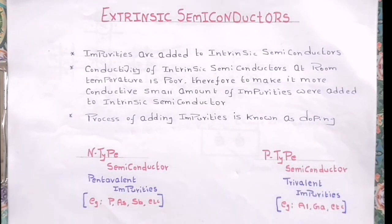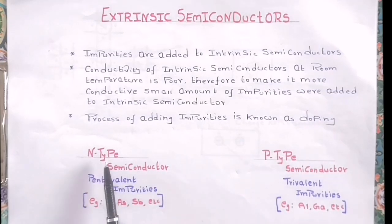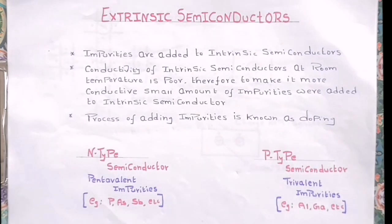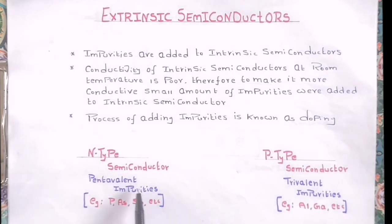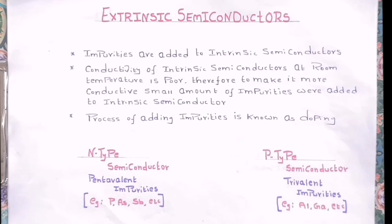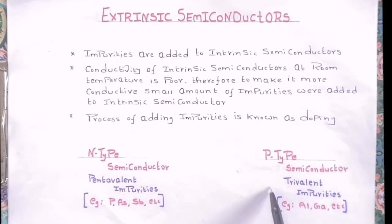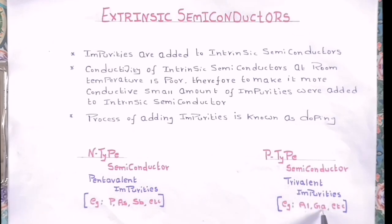Based on these impurities, extrinsic semiconductors are classified into two types: N-type and P-type semiconductors. In N-type semiconductors, pentavalent impurities are added — examples are Phosphorus, Arsenic, and Antimony. In P-type semiconductors, trivalent impurities are added — examples are Boron, Aluminium, and Gallium.